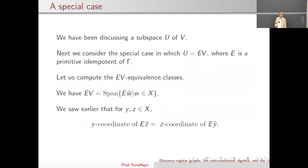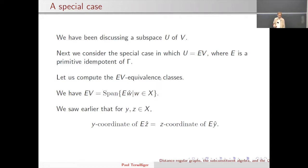A corollary is that for a subspace U of V, the following are equivalent: U generates the function algebra V, and every U-equivalence class has cardinality one. Now we've been discussing a generic subspace U of V. Let's consider the special case where U is an eigenspace for the graph — that is, U equals EV where E is some primitive idempotent. Let's compute the EV-equivalence classes.